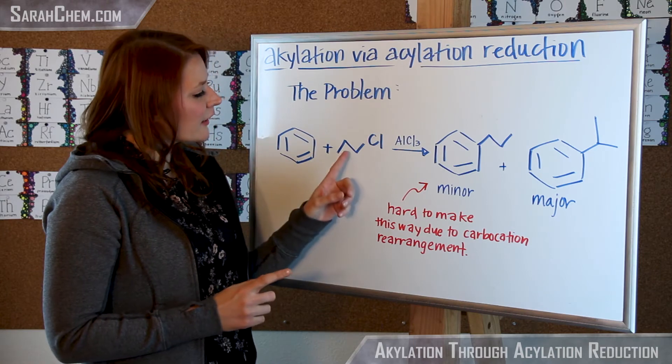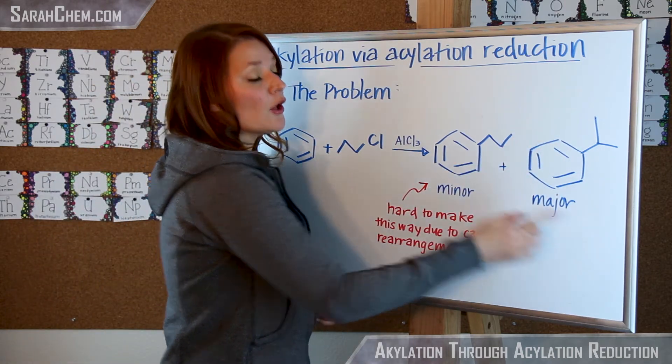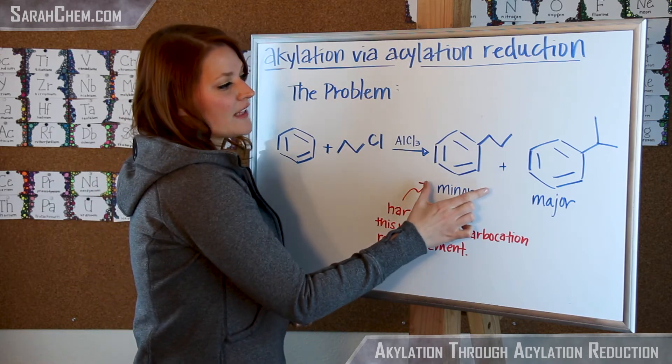The problem is that this electrophile will rearrange such that the major product is this group over here rather than the one we want which is now a minor product.